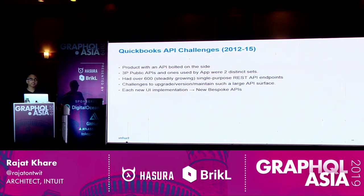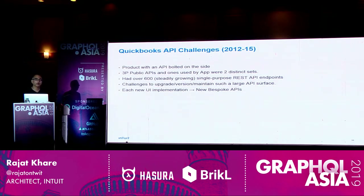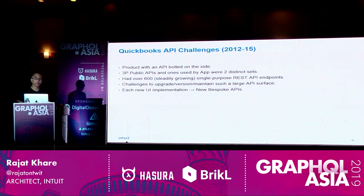To build experiences, there were frequent needs like: I just need these three attributes of the customer, these two attributes of their references, and these five attributes of their invoices. As we built the single-page application, we frequently created small ad-hoc APIs to serve that specific need for efficiency, leading to the problem of 600 and steadily growing APIs that were becoming unmanageable.